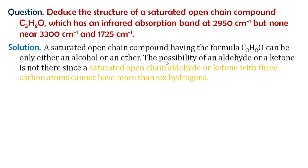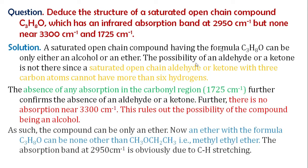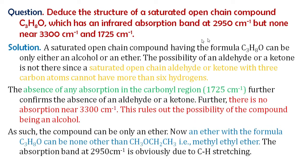With three carbon atoms, C3H8O has 8 hydrogens, so an aldehyde or ketone is not possible. Since the 1725 cm⁻¹ carbonyl band is absent, it is not an aldehyde or ketone. Since the 3300 cm⁻¹ band is also absent, it cannot be an alcohol because there is no O-H stretching. Only a CH stretching band at 2950 cm⁻¹ is present, so the compound must be an ether: CH3-O-CH2CH3.